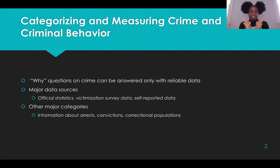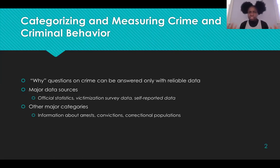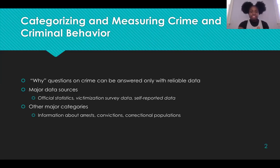Victimization survey data and self-reported data are two major categories of crime data that consist of information about arrests, information about convictions, and information about correctional populations. Correctional populations, as mentioned in the last lecture, are those populations that are imprisoned, on probation, and on parole. Other major categories of official crime data similarly consist of information about arrests, convictions, and correctional populations.